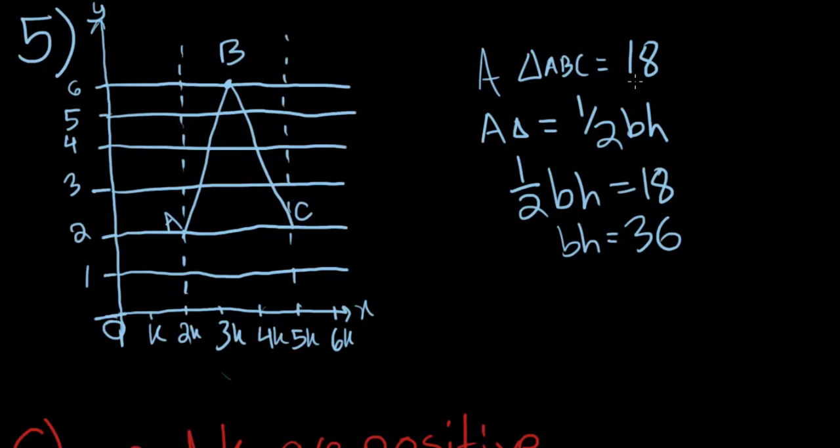We know its height already, it's 4, because its base starts at y value 2, and it goes up to y value 6. So 4B is equal to 36, and therefore the base is equal to 9. Now, we just need to figure out the value of K.